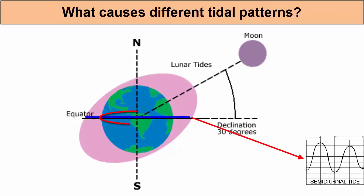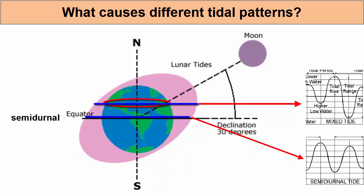So if we are at the equator, we will rotate through two bulges of roughly the same water level and experience semidiurnal tides. If we are at the mid-latitudes, however, we will move through the two bulges but different parts of them with different water levels. Thus, we experience semidiurnal mixed tides.